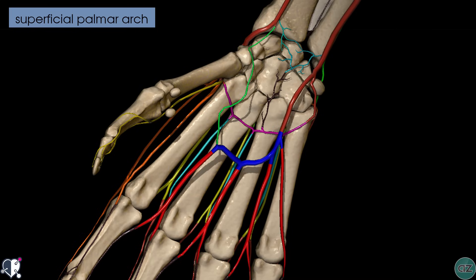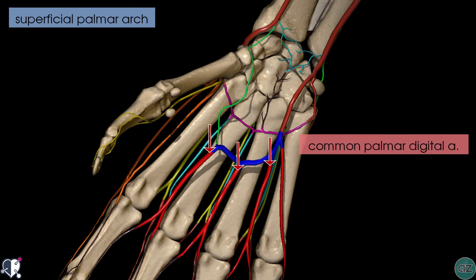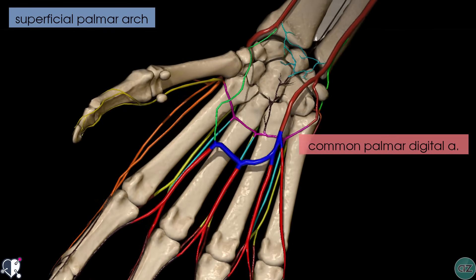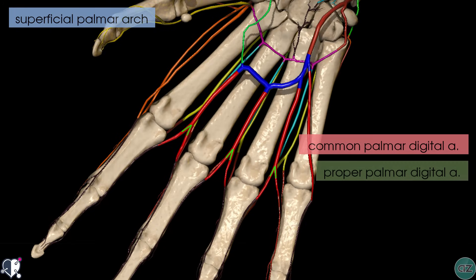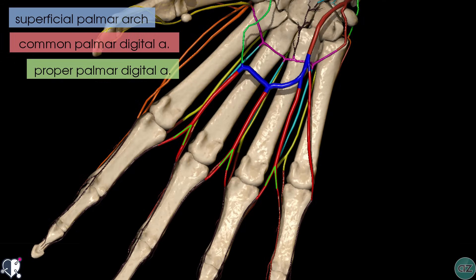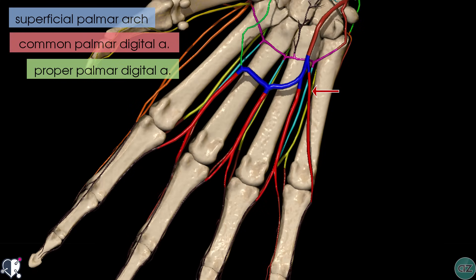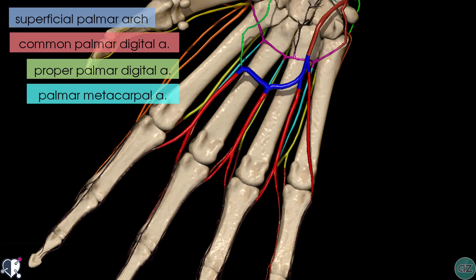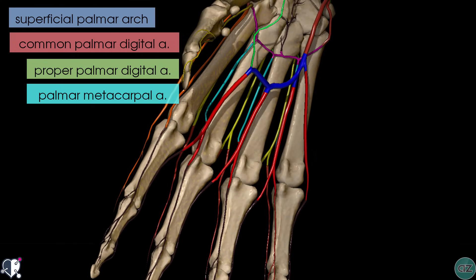Arising from the superficial palmar arch are the common palmar digital arteries, highlighted in red. The common palmar digital arteries then divide into proper palmar digital arteries to supply the digits. Medially, there is another branch which comes off to supply the little finger. The common palmar digital arteries anastomose with the palmar metacarpal arteries, which arise from the deep palmar arch highlighted in purple.